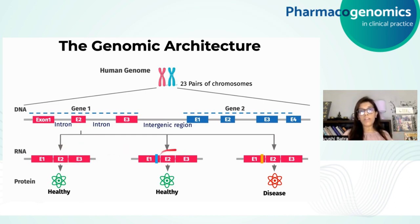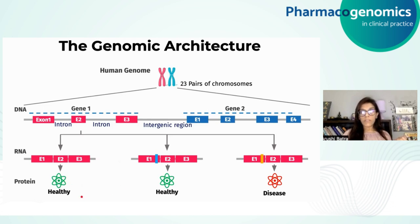There could be alternative splicing mechanisms wherein not all exons get coded in a transcript. Once the mature mRNA is formed, translation happens and proteins are formed. There could be various scenarios where mutations or variations within the exons lead to a defective protein, which would in turn be involved in a particular disease.